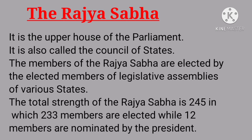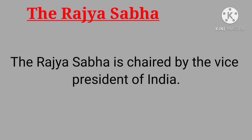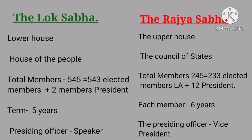The Rajya Sabha is the upper house of the Parliament. It is also called the Council of States. The members of the Rajya Sabha are elected by the elected members of the Legislative Assemblies of various states, such as Kerala, Karnataka, Tamil Nadu, Andhra Pradesh, etc. The total strength of the Rajya Sabha is 245, in which 233 members are elected while 12 members are nominated by the President. The Rajya Sabha is chaired by the Vice President of India.